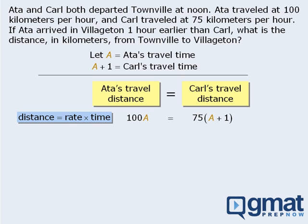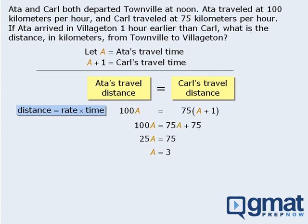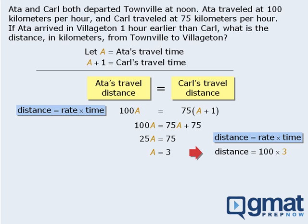At this point we have an equation we can solve for A. First we will expand the right-hand side, then subtract 75A from both sides, and then divide both sides by 25 to get A equals 3. This tells us that Ada's travel time was 3 hours. We can then find the distance by applying the distance formula: distance equals 100 km/h times 3 hours, which equals 300 km. So the distance from Townville to Villagetan is 300 km.